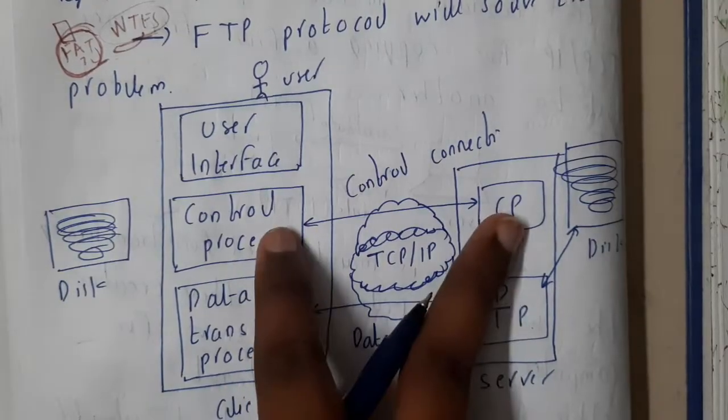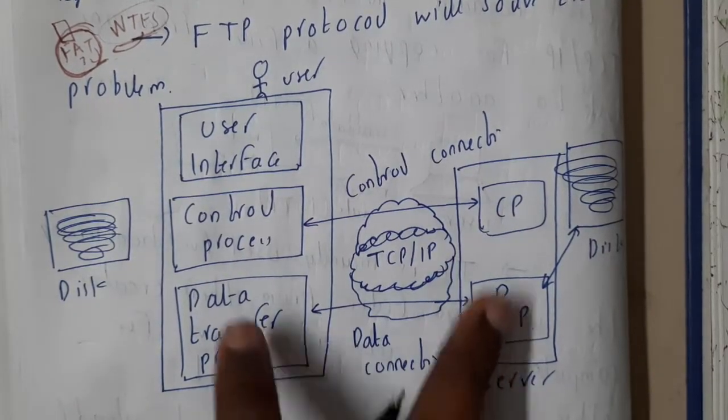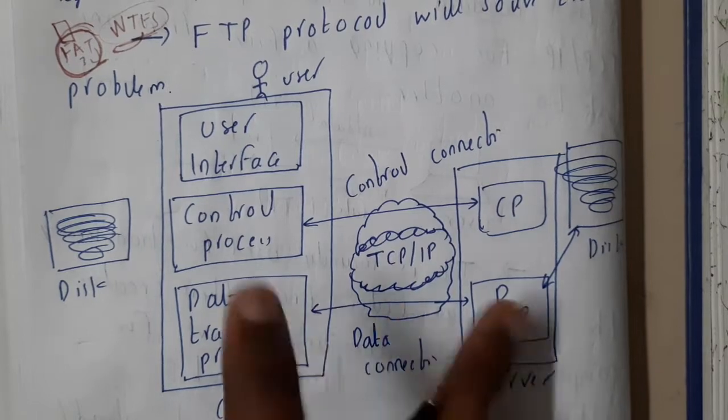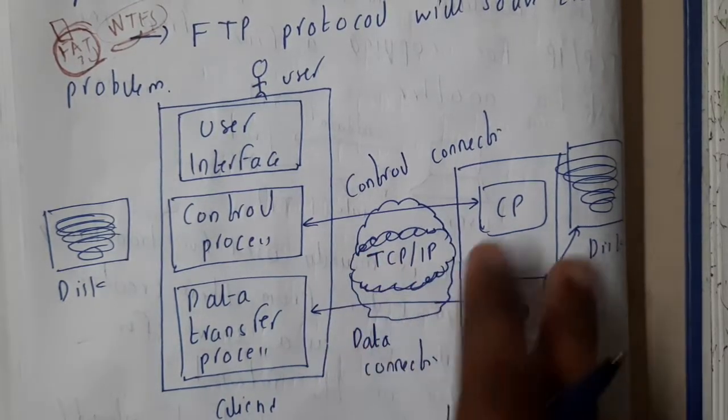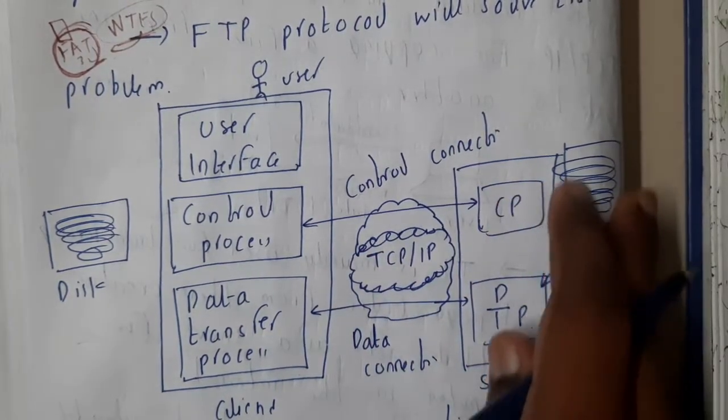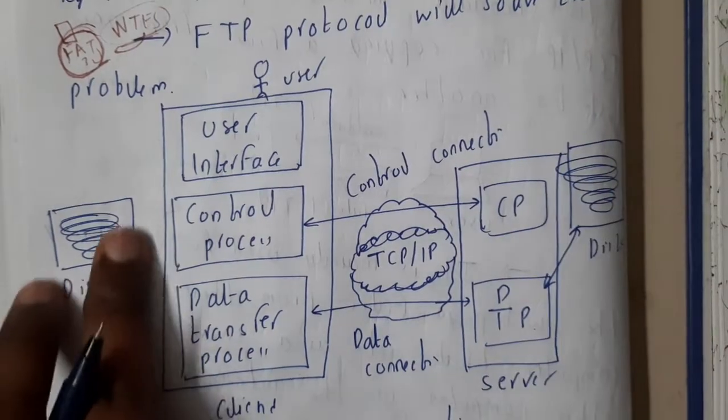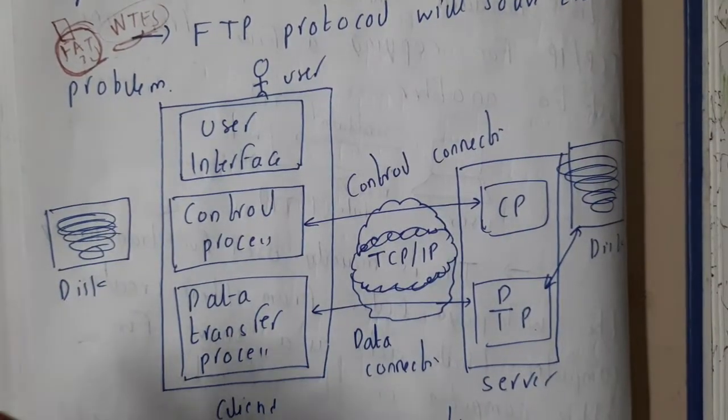These two will be connected to each other—this is control connection, this is data connection. Here the control will be transferred and here data will be transferred as per the requirements. The data can be collected from the server's disk. These disks are nothing but hard disks.